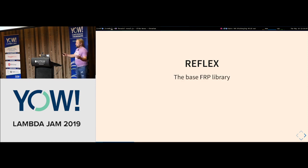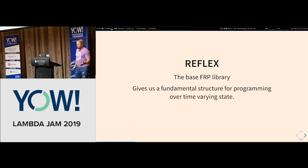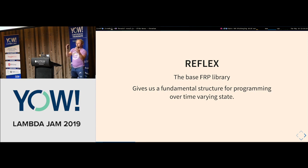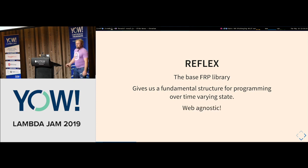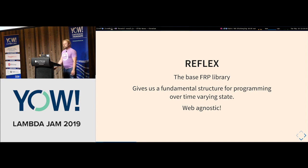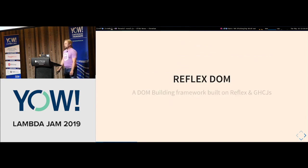The first thing is Reflex itself, which is the base FRP library. FRP means functional reactive programming — it gives us a fundamental structure for programming over time-varying state. In an event-sourced world you have values that change over time as events flow into your system; FRP gives us a language DSL to model this. It's web-agnostic, so if you don't care about web you can still use it.